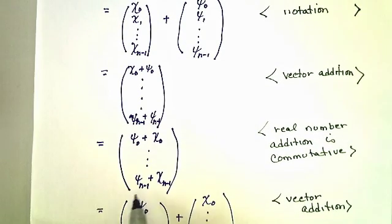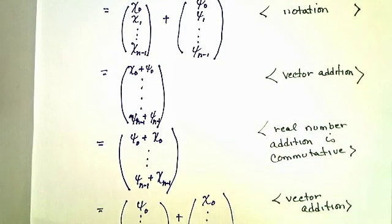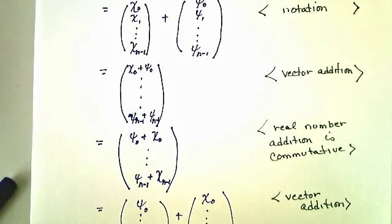Which is actually, this first vector is notation for y. And the second is the notation for the vector x. And so, I think we've done it.